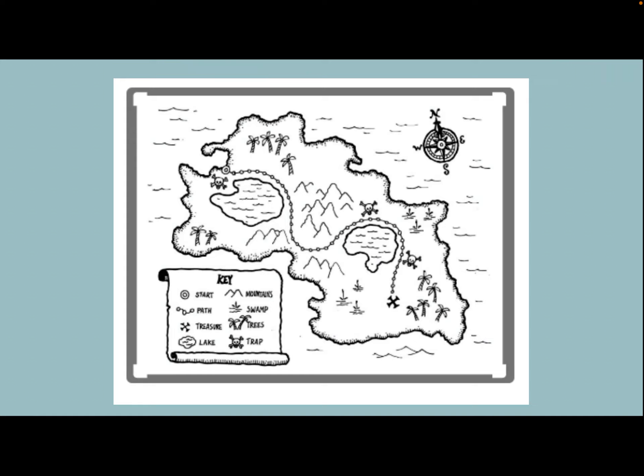But what be those strange looking skull and crossbones? One, two, three — what do they be meaning? Oh, take a look at the key, you say. Oh, my goodness, they are traps. Beware, mateys, of those traps.